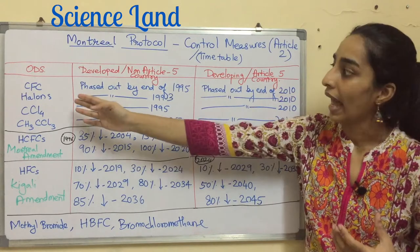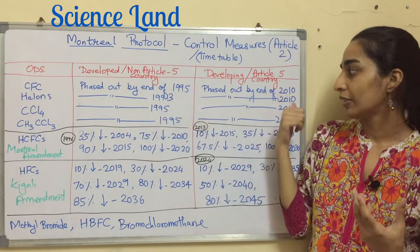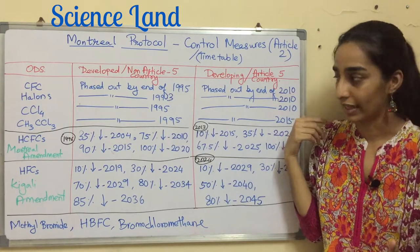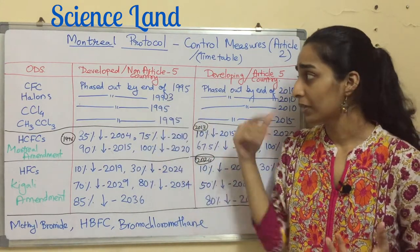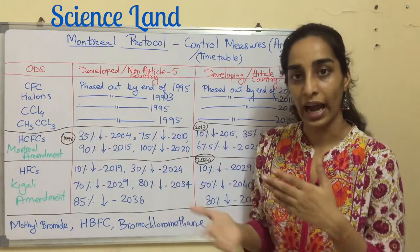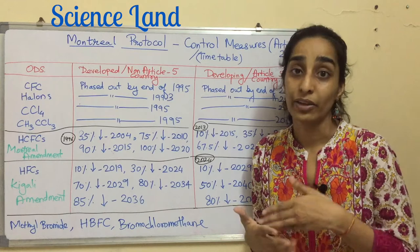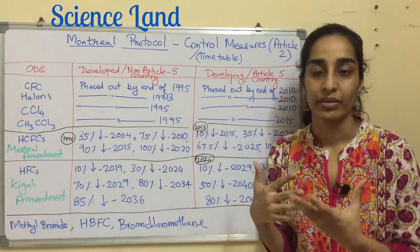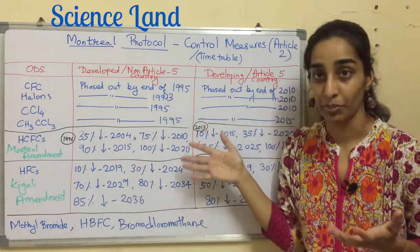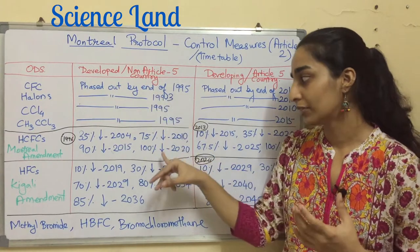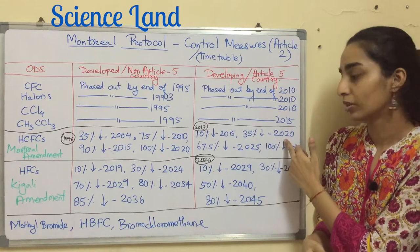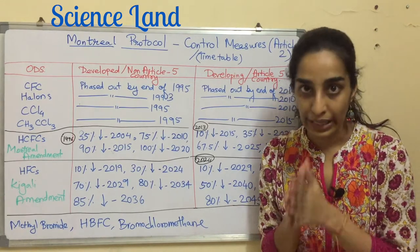Carbon tetrachloride was phased out by 1995 in developed countries and by 2010 in developing countries. Methyl chloroform was phased out by 1995 in developed countries and by 2015 in developing countries. HCFCs — hydrochloro-fluorocarbons — and HFCs are currently in the phasing-out schedule. HCFCs relate to the Montreal Amendment and HFCs to the Kigali Amendment. For HCFCs: developed countries must achieve 100% reduction by end of 2020, and developing countries 35% reduction by 2020.